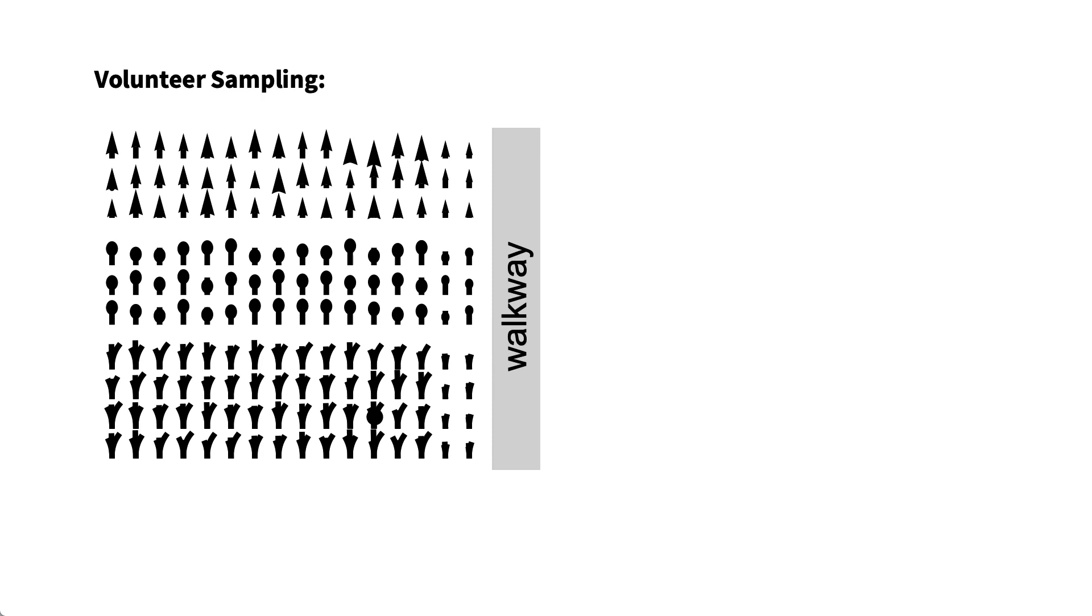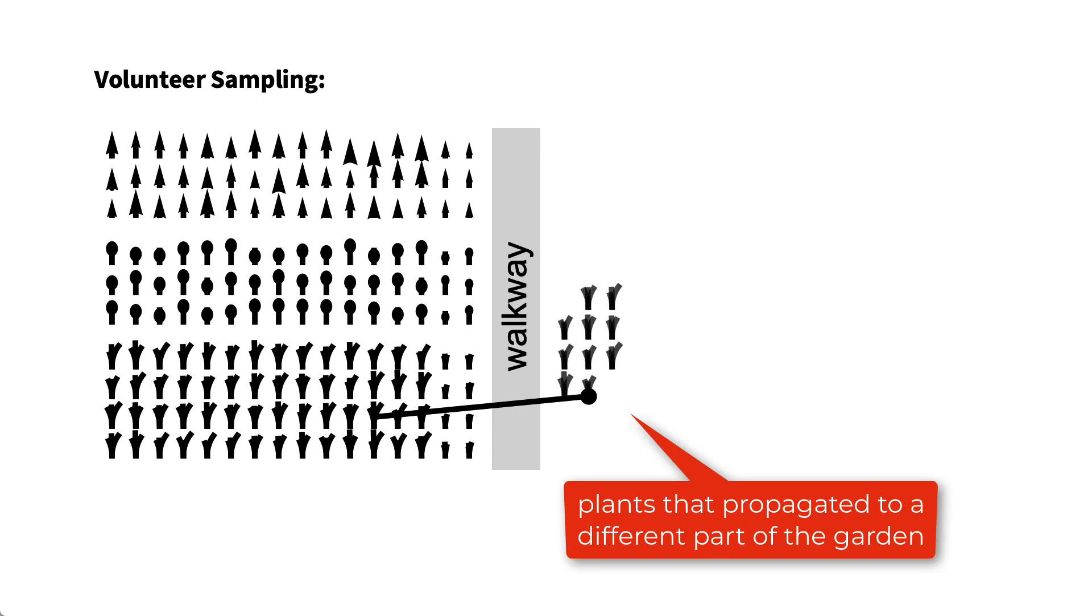Another common source of bias is volunteer sampling, which is sampling in which individuals self-select to be part of the sample, such as individuals who choose to respond to a public survey, or in the garden example plants that are selected by some process that does not select from the entire garden, such as selecting plants that have somehow propagated to some part of the garden.